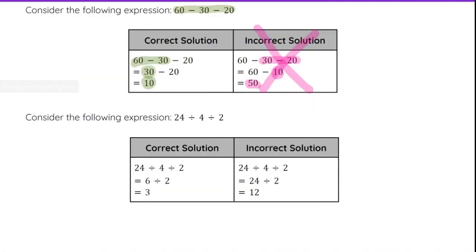Additionally, consider the following expression, this time with division. Looking at this problem, we have 24 ÷ 4 ÷ 2. If we follow the order of operations and we do the division left to right, 24 ÷ 4 is 6, and then 6 ÷ 2 is 3. So that is our correct answer.